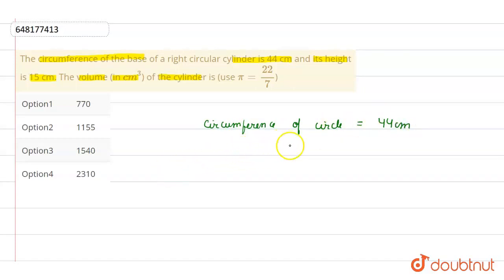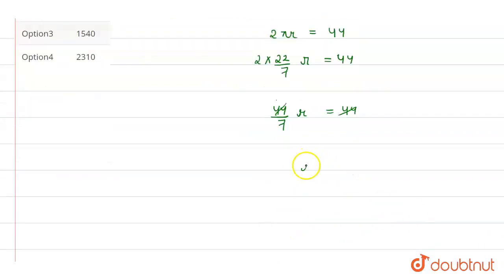We know that the circumference of the circle is 44 cm. The circumference formula is 2πr, so 2 × 22/7 × r = 44. Simplifying, 44/7 × r = 44. The 44s cancel, so the radius of the circle is 7 cm.